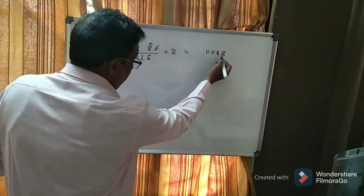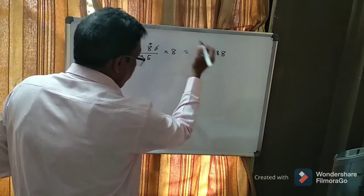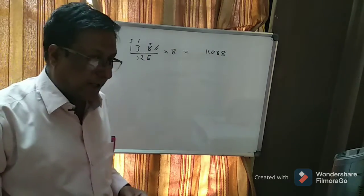Now we have 3 digits over here. So we leave 3 digits from the right hand side, put a point over there and your answer is 11.088.